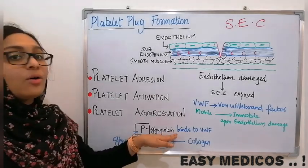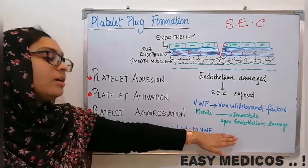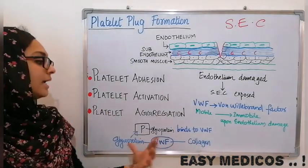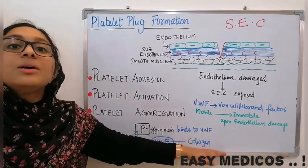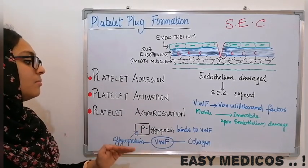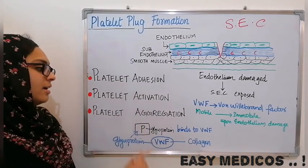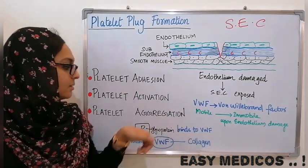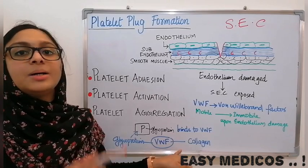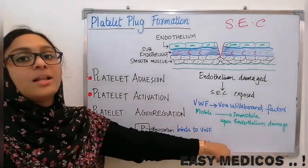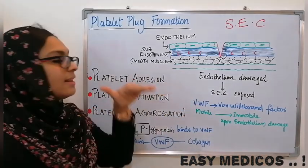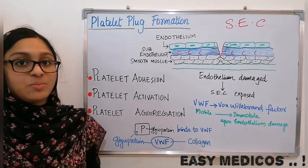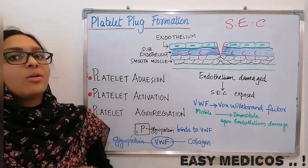The glycoprotein on the platelets binds to the VWF. The VWF will then adhere to the sub-endothelial collagen, and through this VWF, the platelets will adhere to the sub-endothelial collagen. VWF is acting like a bridge between the glycoprotein on the platelet and the sub-endothelial collagen.